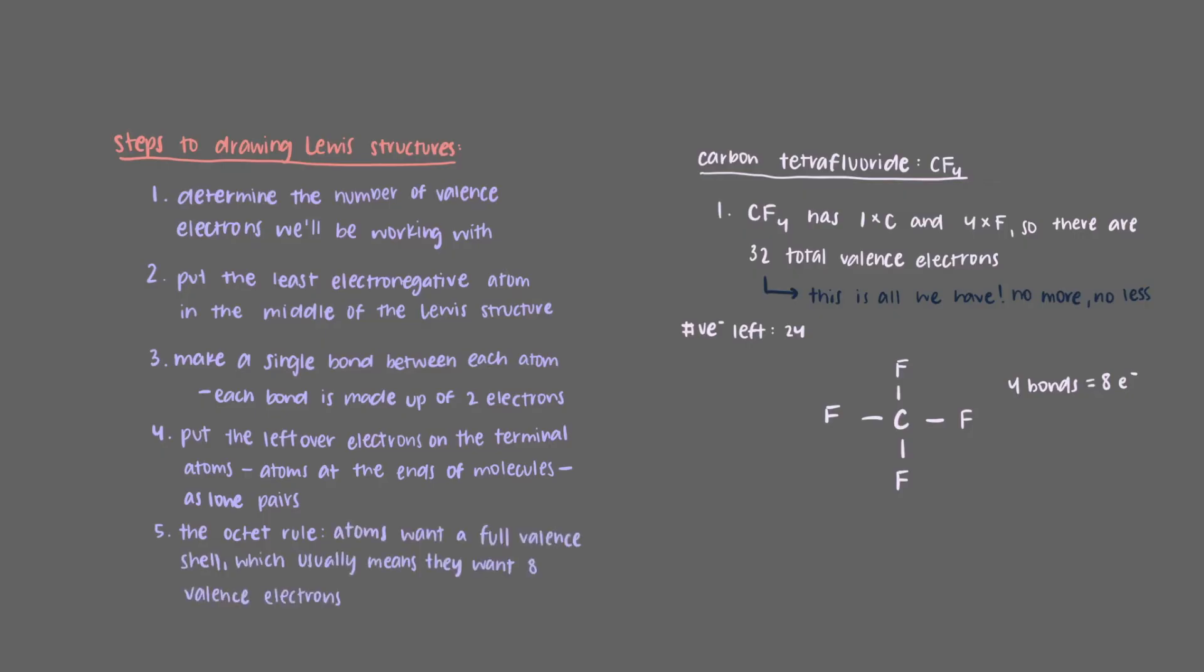Atoms want a full valence shell, which most of the time means that they need a total of 8 valence electrons. So as you add electrons around each atom, keep this rule in mind so that you don't add too many or too few electrons to each atom. Also keep in mind that each bond is made up of 2 electrons.